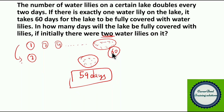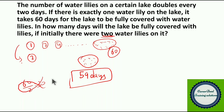Since you start with double the lilies (2 instead of 1), the lake will be fully covered in 59 days instead of 60. Many people mistakenly divide 60 by 2 and write 30, but that is wrong. The answer is 59 days.